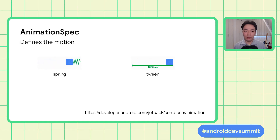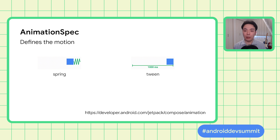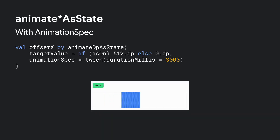Animation behavior like this is represented as animationSpec. Spring is the default animationSpec. Compose provides other types of animationSpec — for example, Tween is a duration-based animationSpec that defines the motion by the duration of animation from start to end. There are several more animationSpecs, so please check out the documentation. Here's how you can specify an animationSpec with animateAsState. In this example, we specify that the animation takes 3 seconds.